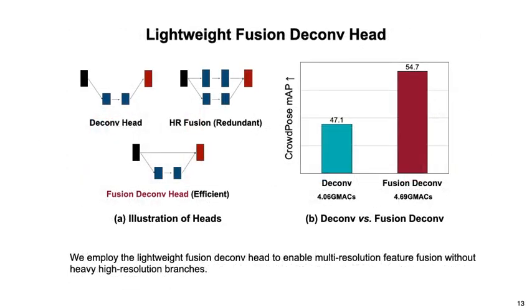The fusion deconv head removes the redundancy in high-resolution branches by directly using long-skip connections, which enables efficient scale-aware fusion while maintaining the high parallelism of the single-branch architecture.